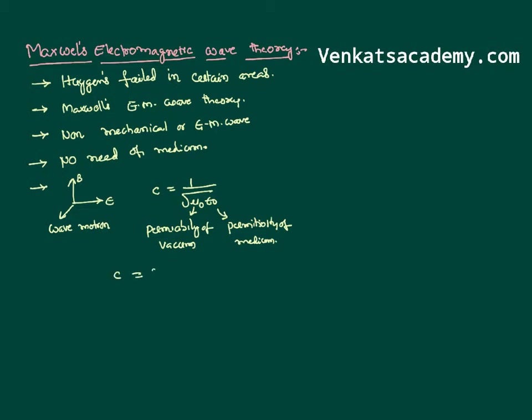By substituting that constant values, it is found that velocity of the light in vacuum is 3×10⁸ meter per second, which is constant, and it is agreeing with the results.